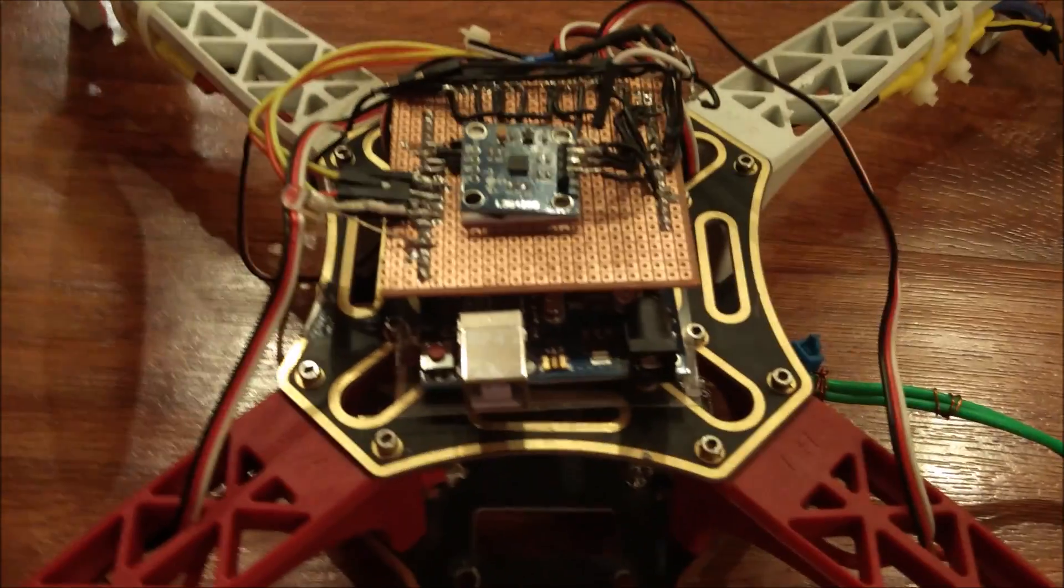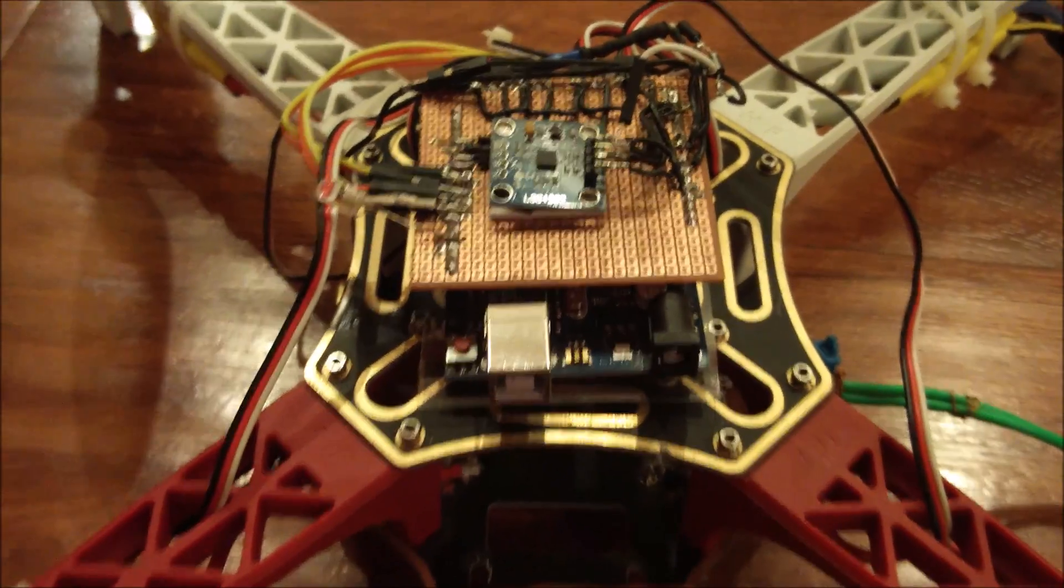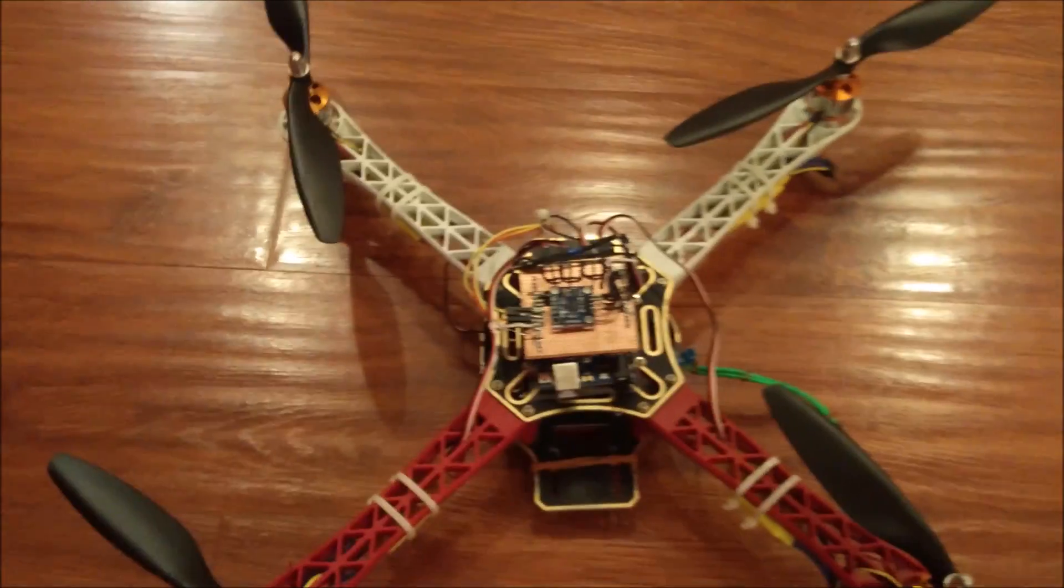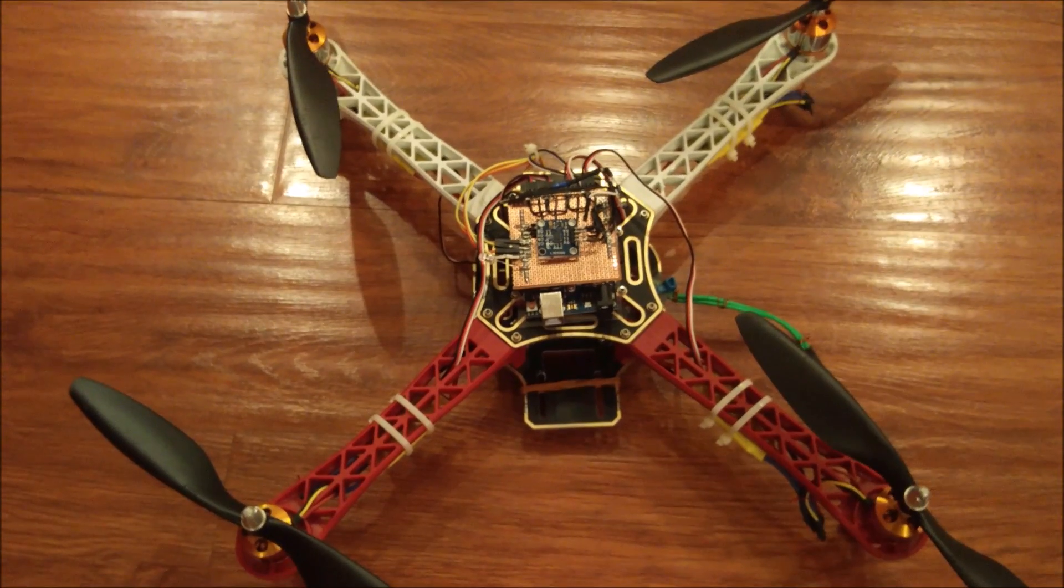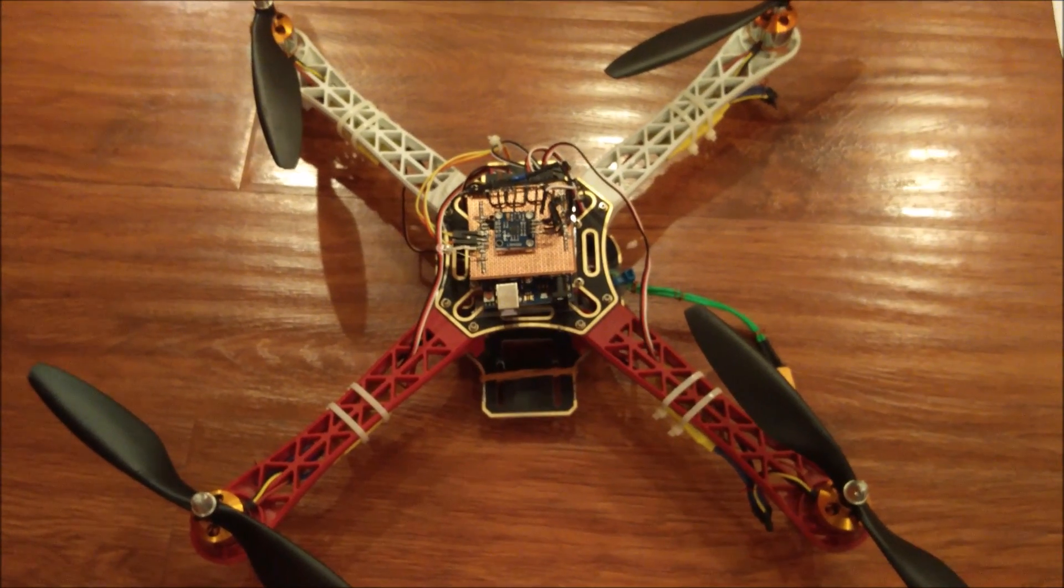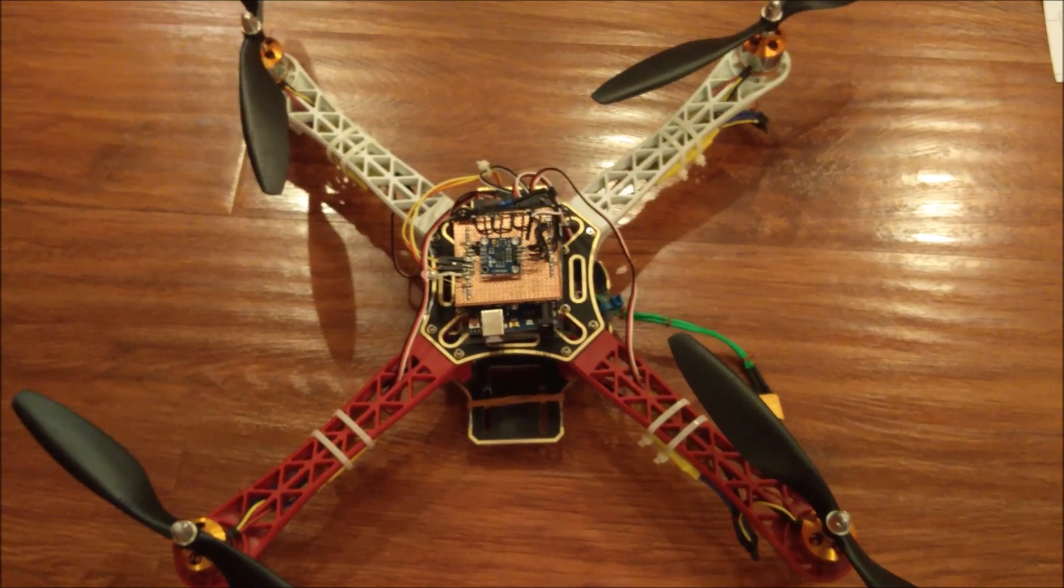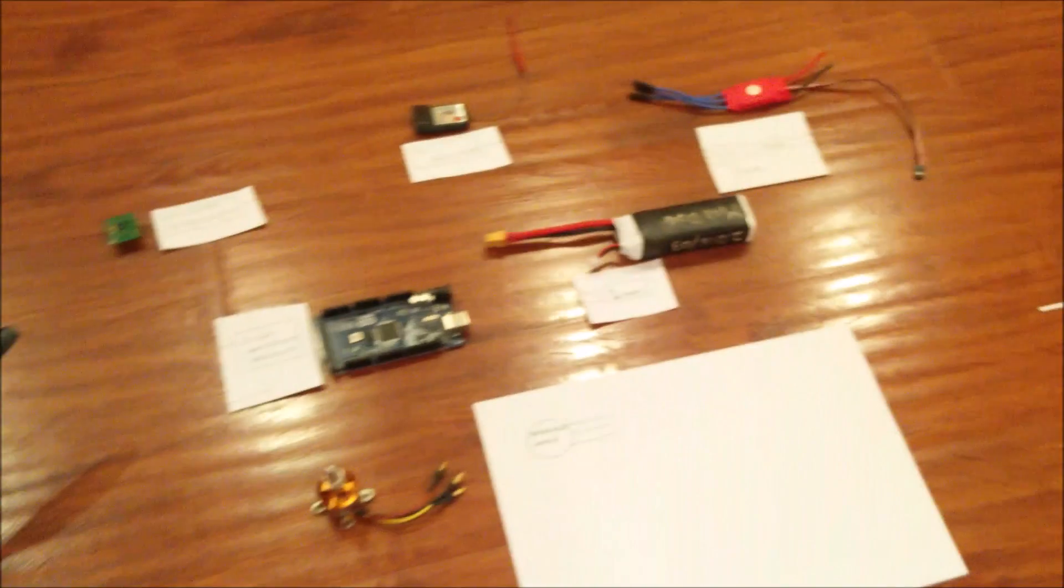At the center of this quadcopter is Arduino, and as any other quadcopter, there are electronic speed controllers and motors. Now to explain to you how all of these work together to keep the drone in the air, I have broken the whole drone down into a few parts.